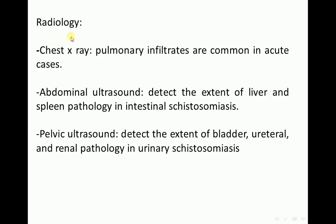Radiology: Chest X-ray — pulmonary infiltrates are common in acute cases. Abdominal ultrasound detects the extent of liver and spleen pathology and intestinal schistosomiasis. Pelvic ultrasound detects the extent of bladder, ureteral, and renal pathology in urinary schistosomiasis.